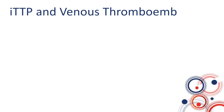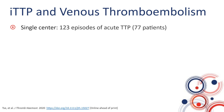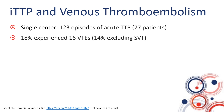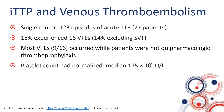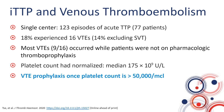Another morbidity during acute TTP, less commonly recognized, is venous thromboembolism. A recent study from Canada reported on 123 episodes of acute TTP in 77 patients and found that 18% had venous thromboembolic events; when excluding superficial vein thrombosis, this rate was 14%. Importantly, at the time these events occurred, patients were not on pharmacologic prophylaxis but had mostly recovered their platelet counts, with a median platelet count of 175,000. This highlights the importance of starting VTE prophylaxis once the platelet count is over 50,000.